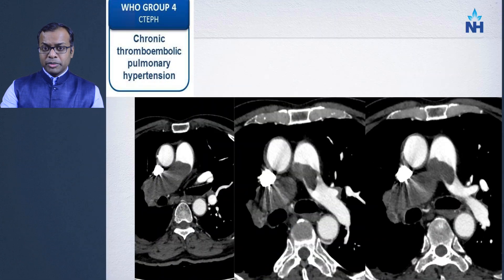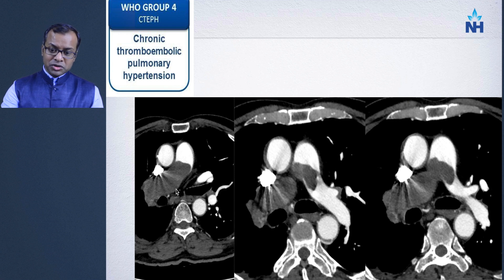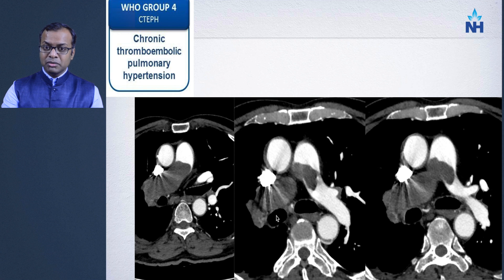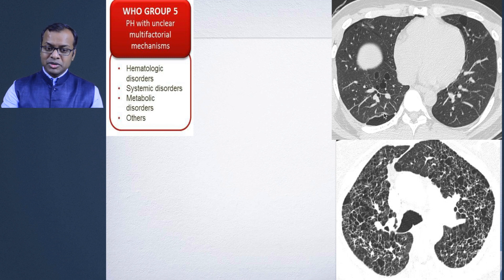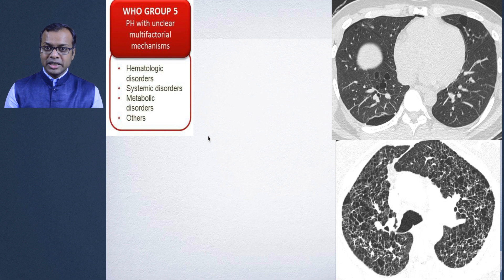Be aware of pathologies mimicking CTEPH. One patient was initially thought to have acute then chronic pulmonary thromboembolism, but after thrombolysis with no change it turned out to be a pulmonary angiosarcoma. The last Group 5 includes pulmonary hypertension with multifactorial mechanisms — cystic lung diseases such as Langerhans cell histiocytosis and LAM, as well as metabolic disorders such as thalassemia or chronic anemia.